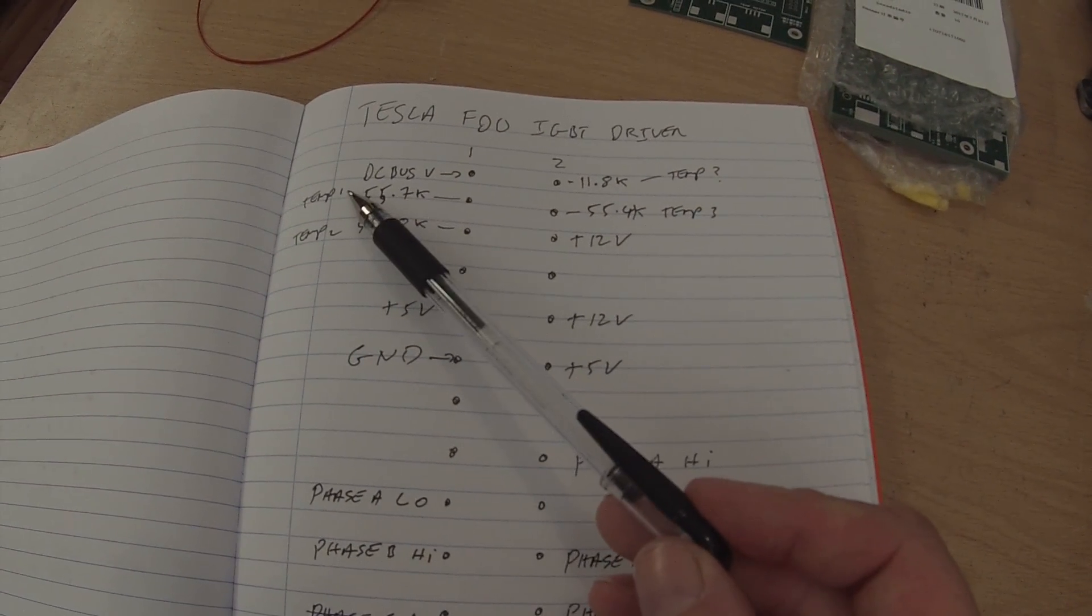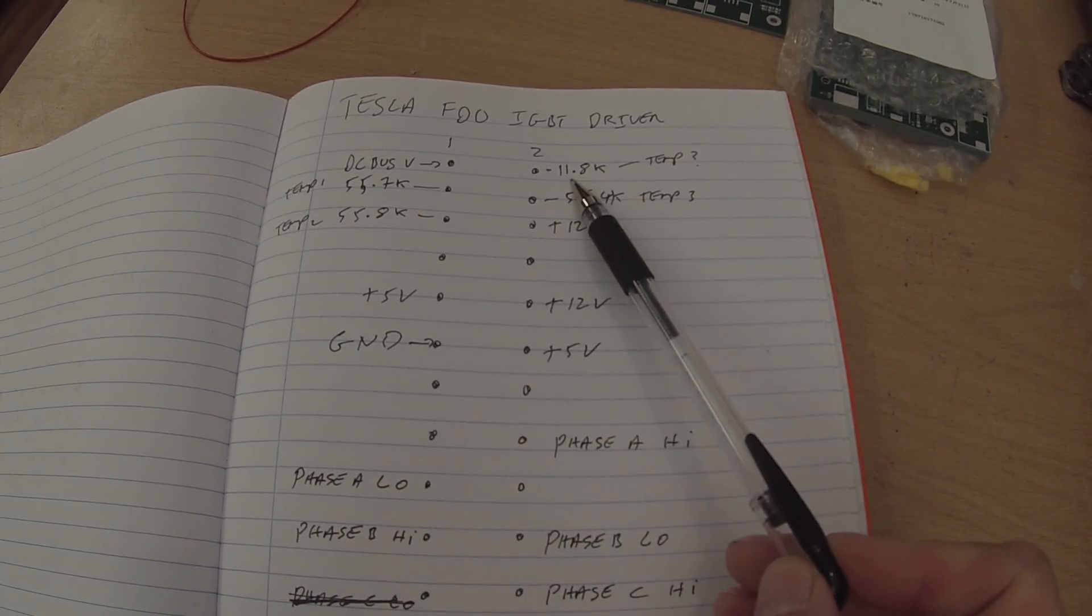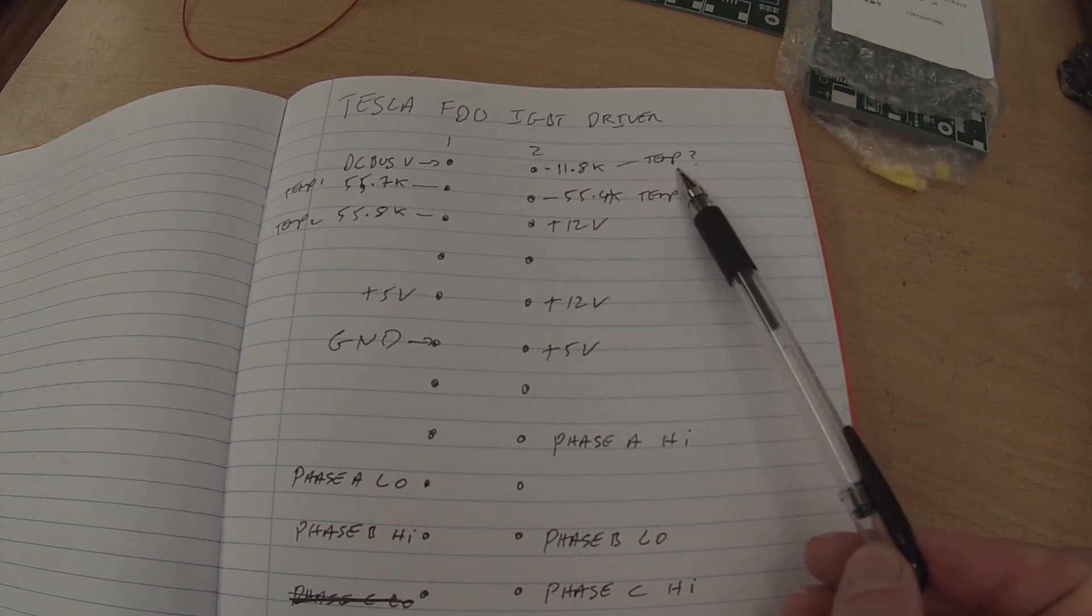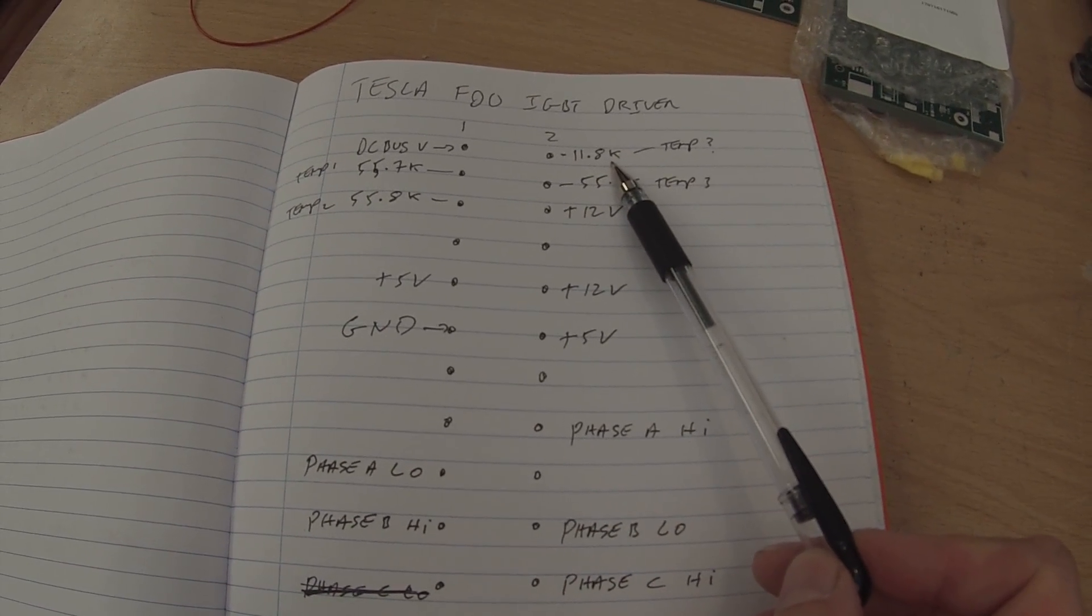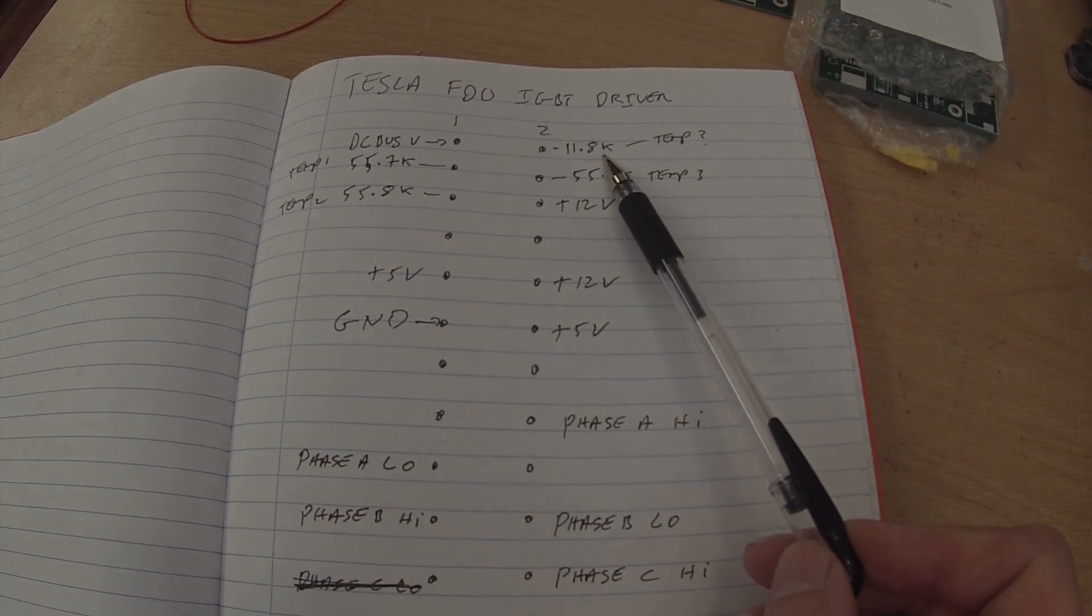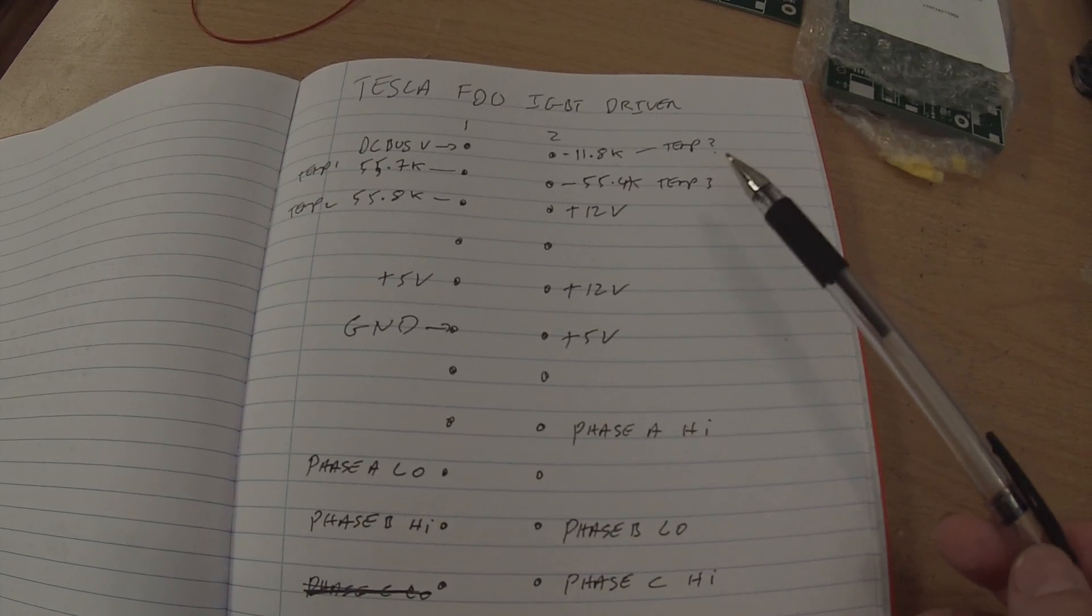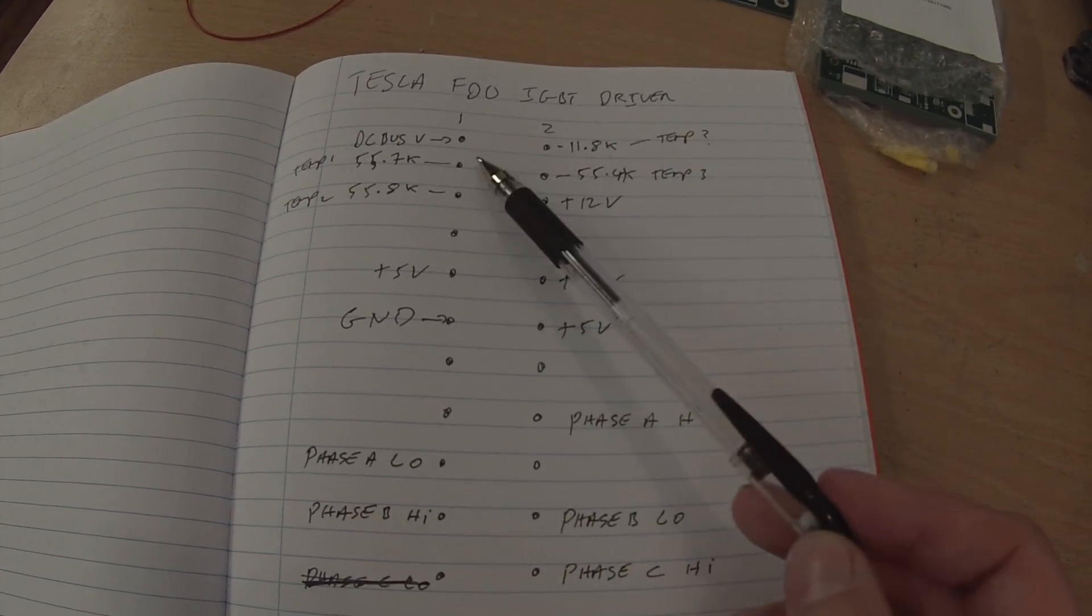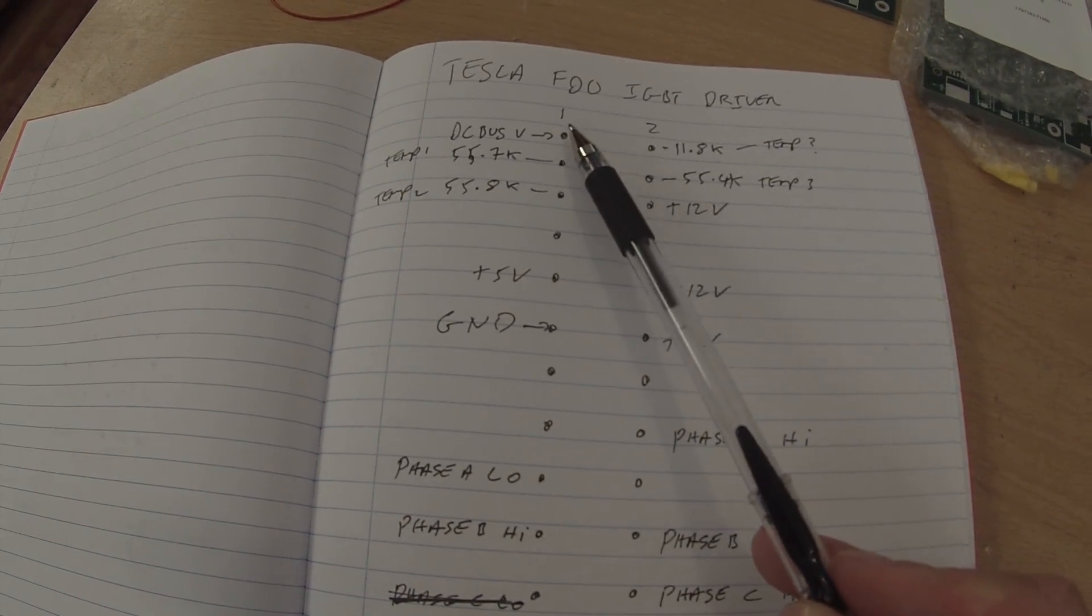I'm calling them temp 1, 2, and 3. Another one here would give me 11.8K, so I don't know if that is a temperature reading. It probably is. That may be related to the case temperature perhaps. Not sure. Anyway, these three are our heatsink temperature sensors.